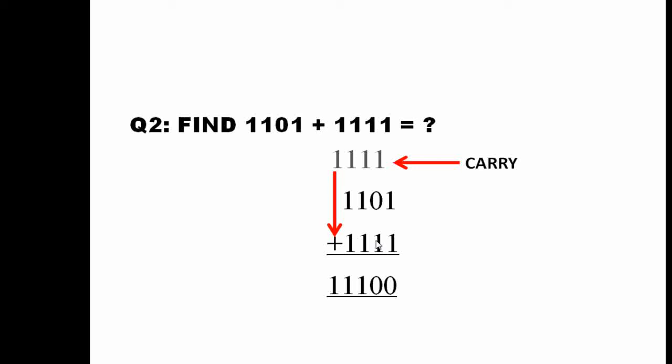Now after writing into rows let us add column wise. Start from the rightmost. So the rightmost column is having 1 and beneath that you have 1. So 1 plus 1 would be 0 and a carry of 1.